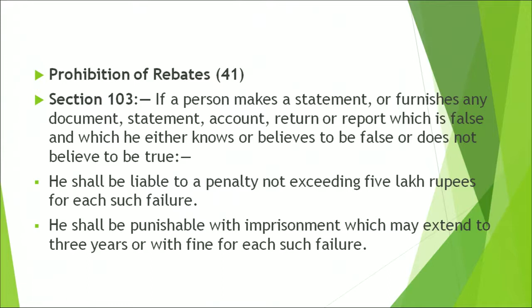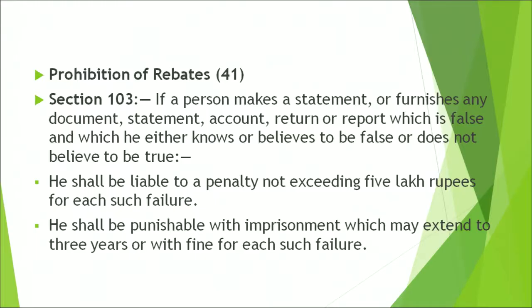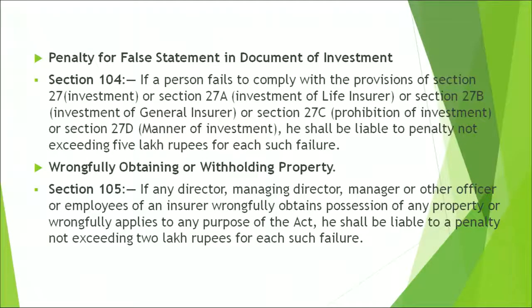For each such case, the penalty may go up to 5 lakh rupees, and he shall be punishable with imprisonment which may extend up to 3 years, or a fine. There is also a penalty for false statements in documents of investment. Under Section 104, if a person fails to comply with the provisions of Section 27 for investments, Section 27A for investment of life insurer, Section 27B for investment of general insurer, Section 29C for prohibition of investment, or Section 27D for manner of investment, then in case of non-compliance, the person will be liable to a penalty not exceeding 5 lakh rupees.